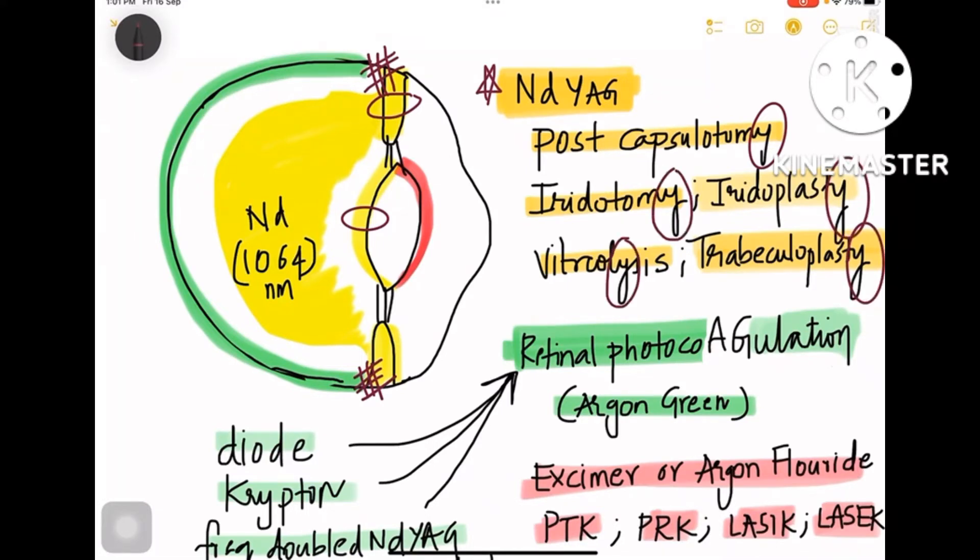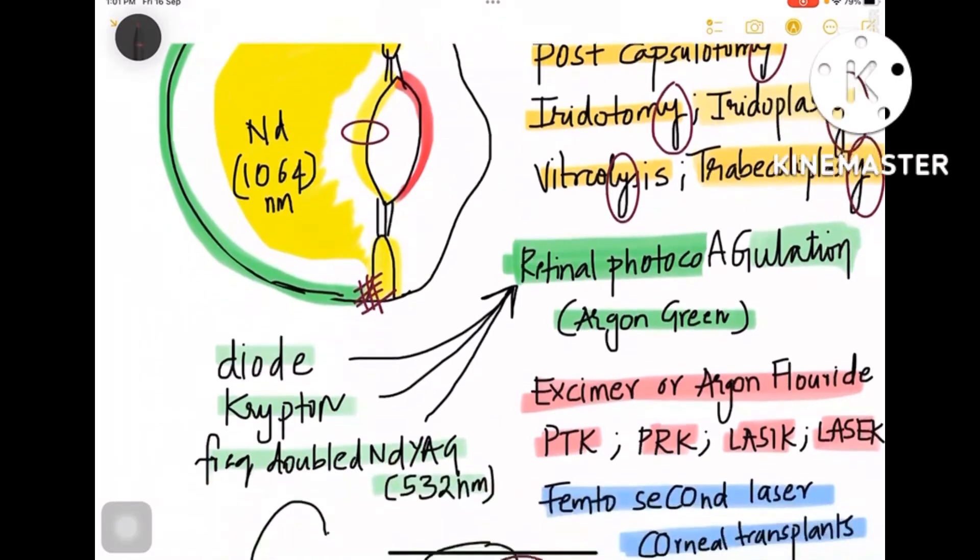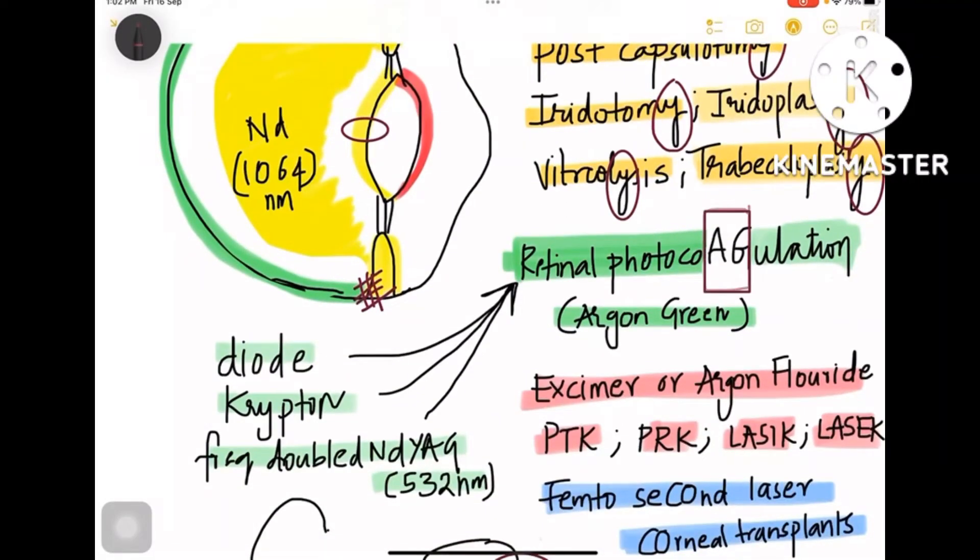And trabeculoplasty, which is done at trabecular meshwork—I have drawn a meshwork there—so trabeculoplasty is also for Nd:YAG laser. Coming to retinal photocoagulation, you have AG in the name, so AG is Argon Green. That is for retinal photocoagulation.